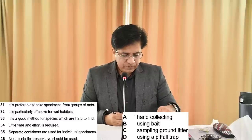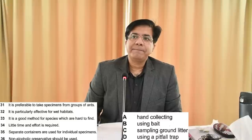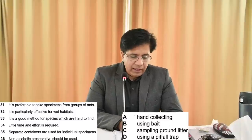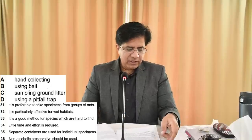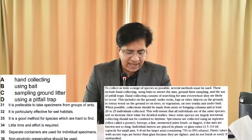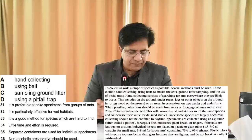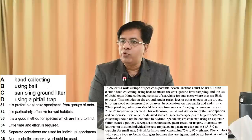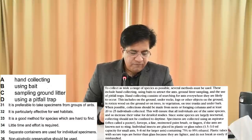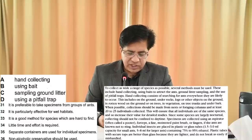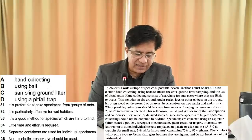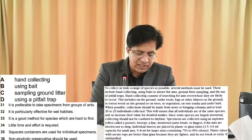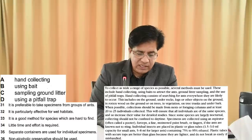Question 31: 'It is preferable to take specimens from groups of ants.' Come back to paragraph B — sixth line — it reads: 'where possible, collections should be made from nests or foraging columns and at least 20 to 25 individuals collected.' That means it is preferable to take specimens from groups of ants, which ensures all individuals are of the same species. So the answer for 31 is A.